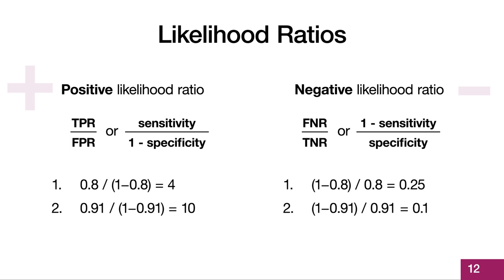This slide shows how we calculate likelihood ratios. Calculations for positive likelihood ratios are shown on the left and negative likelihood ratios on the right. The first example is a test with a sensitivity and a specificity of 80%, which gives a positive likelihood ratio of 4 and a negative likelihood ratio of 0.25. The positive likelihood ratio of 4 is a pretty solid number, as is a negative likelihood ratio of 0.25. The second example is a test with a sensitivity and specificity of 91%, which would be an outstanding clinical test. For this test, the positive likelihood ratio is 10 and the negative likelihood ratio is 0.1. It's hard to get likelihood ratios much better than that.